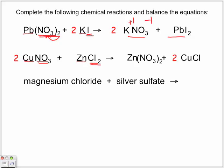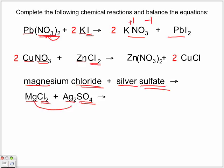Next equation: magnesium chloride and silver sulfate. Not all the time are you going to be given the formulas as chemical formulas — you're going to have to write them out using the five-step crossover rule. We identify metal, non-metal, metal, non-metal. So magnesium chloride and silver sulfate look as follows: magnesium is going to switch places with the silver — magnesium will combine with the sulfate, and silver will combine with the chloride — with the formulas put together using the five-step crossover rule.